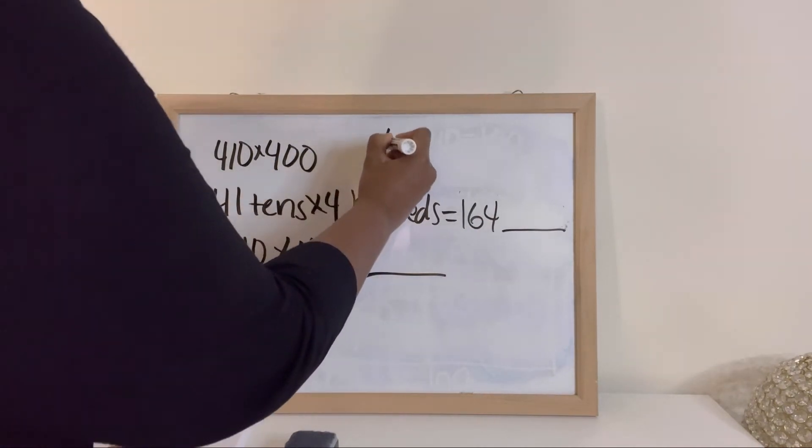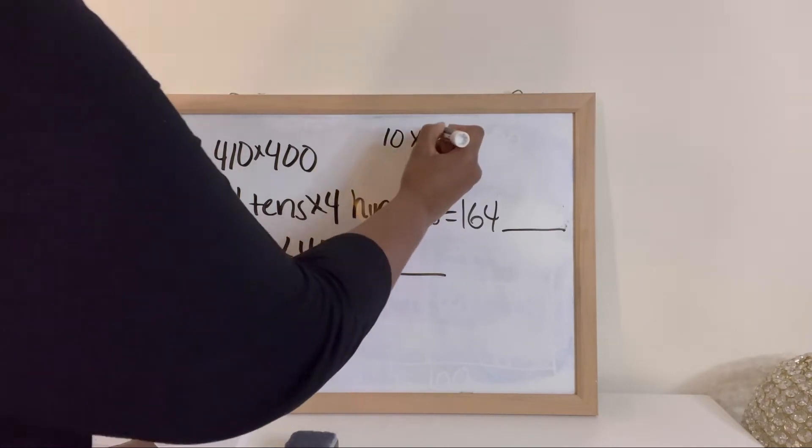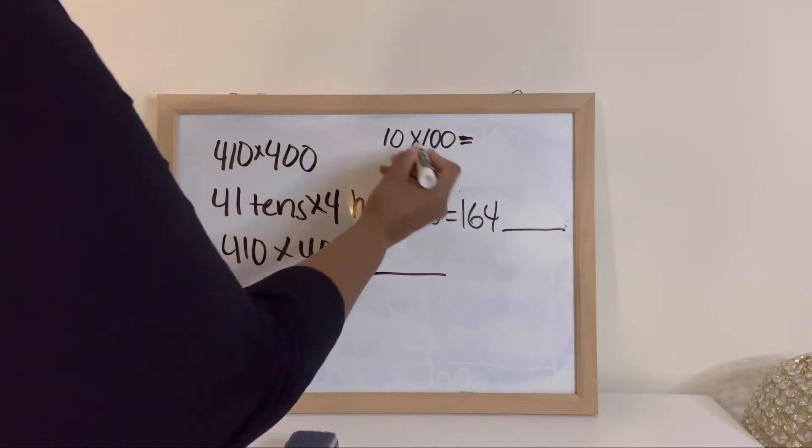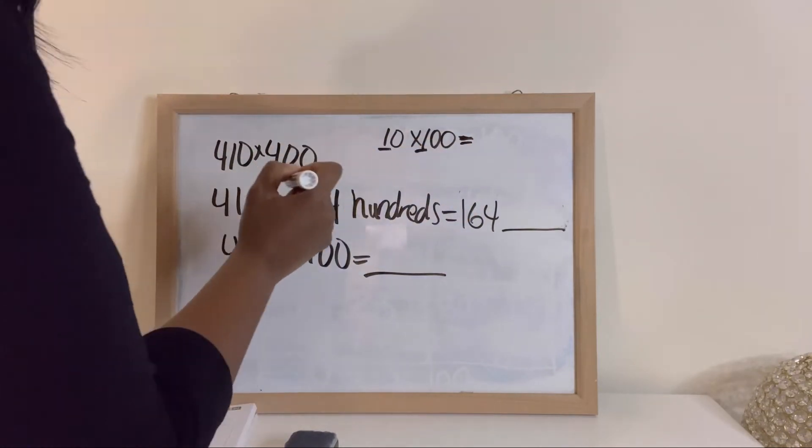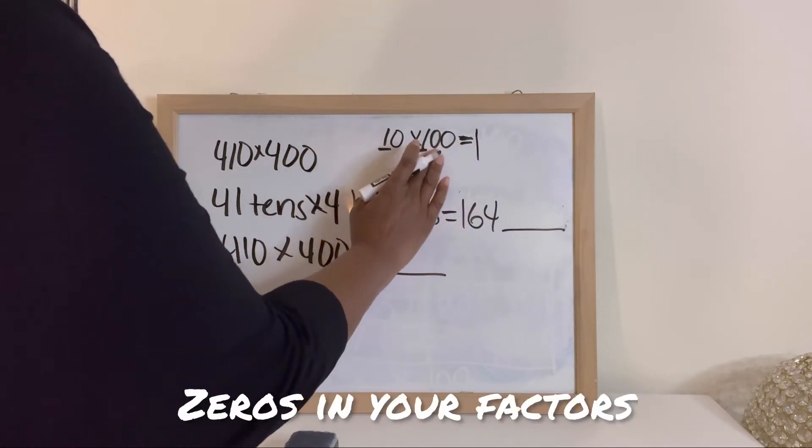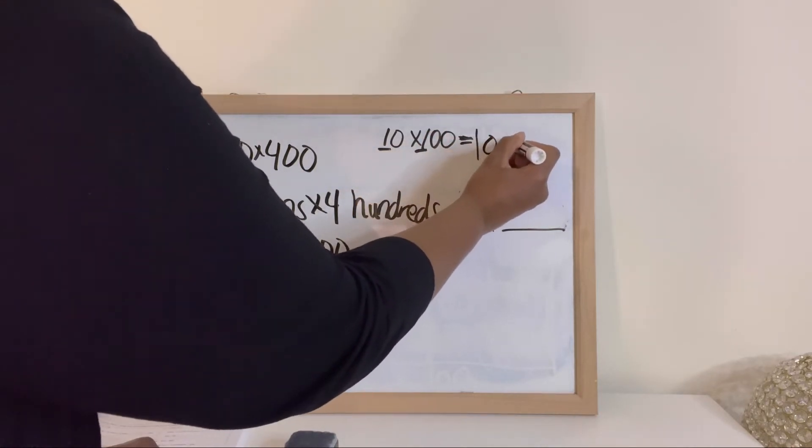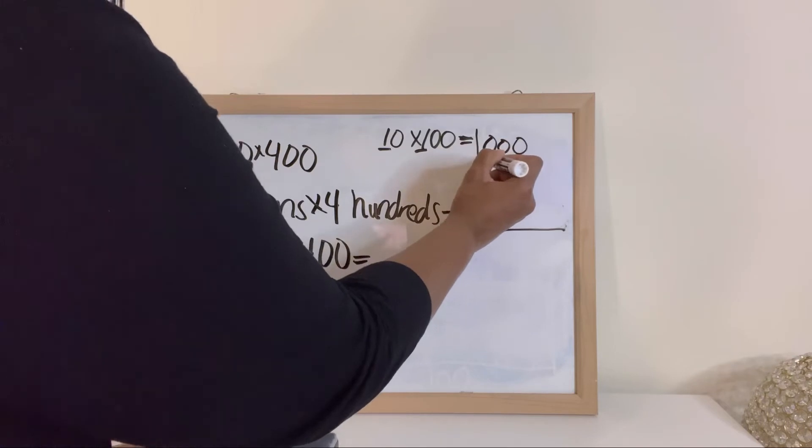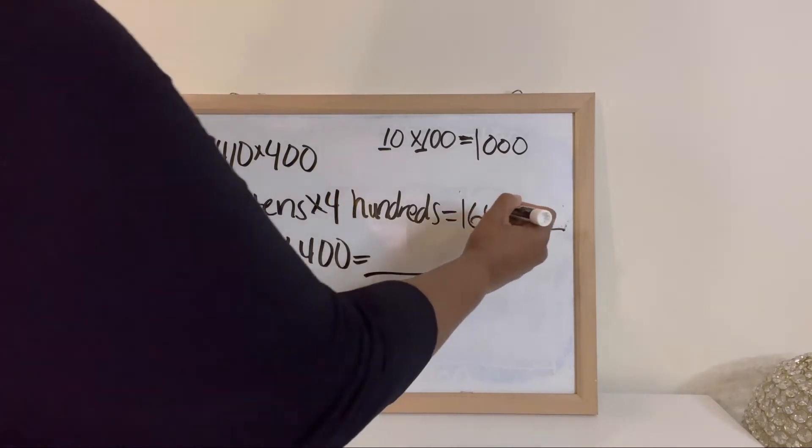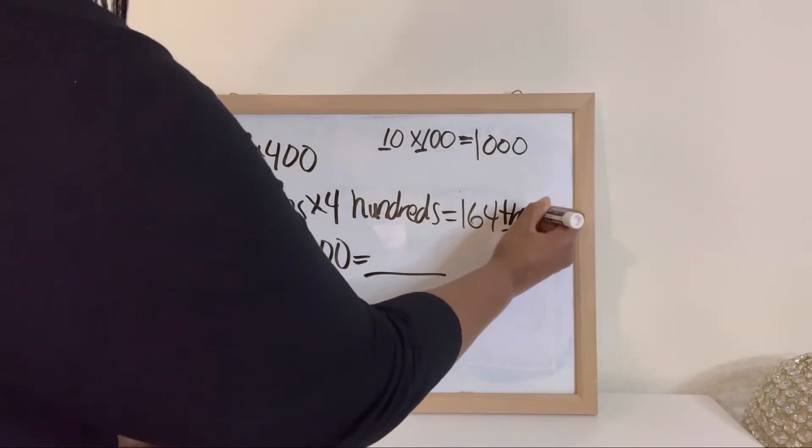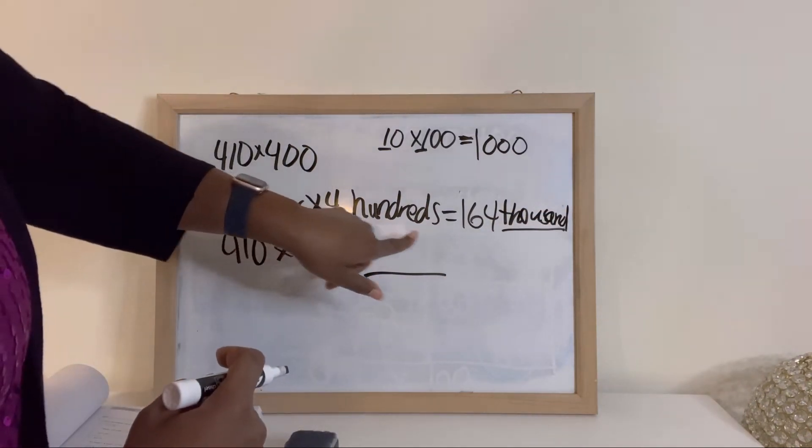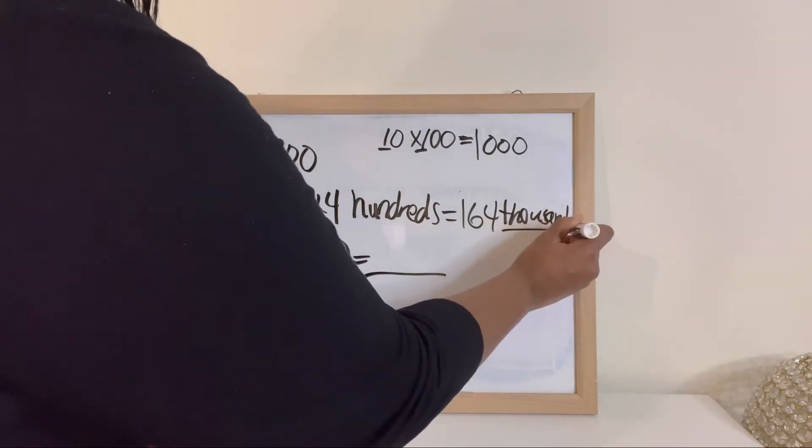So if you have tens times hundreds, you will multiply 1 times 1 and get 1. And then you'll go back and just count your factors: 1, 2, 3. And that's what you will add to your product: 1, 2, 3. So it's a thousand. So how do we show a thousand in word form? We simply write thousands. So when we have tens times hundreds, we get thousands.